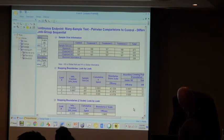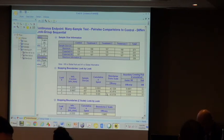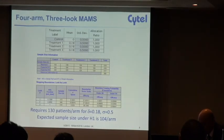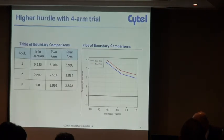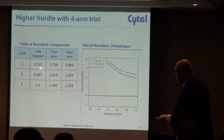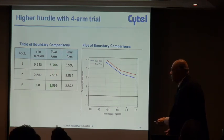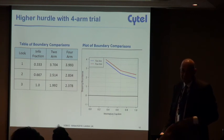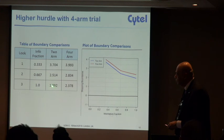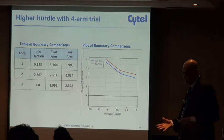Let's look at what the boundaries look like for these two different designs — one which is a two-arm design and one which is a four-arm design. You can see three equally spaced looks. This is a classic O'Brien-Fleming boundary for three equally spaced looks, with Z statistics of 3.7, 2.5, and close to 1.96. An O'Brien-Fleming boundary is pretty conservative at the last look — you've spent some alpha along the way but it's very close to 1.96. Not so with the four-arm trial. Now the final criterion is much stricter — it's almost 2.4 — in order to preserve the type one error.